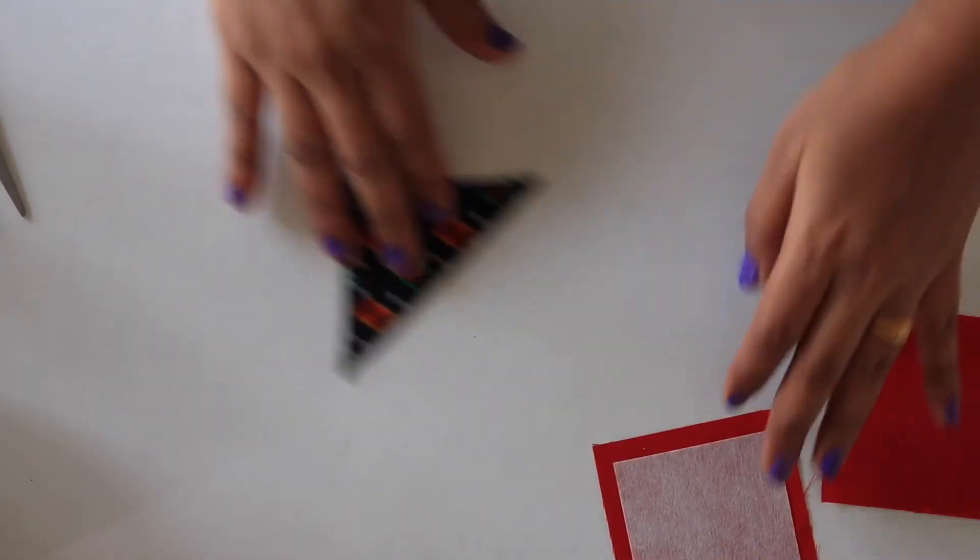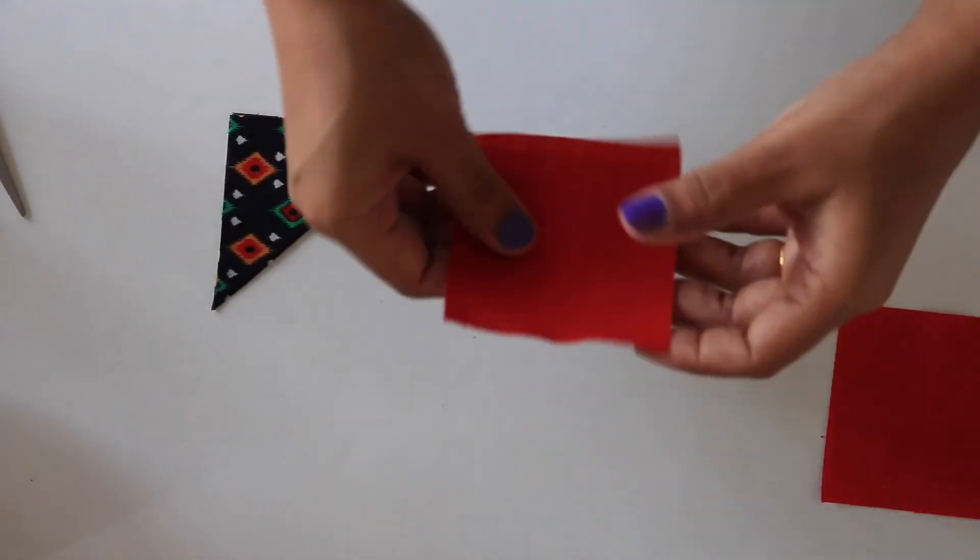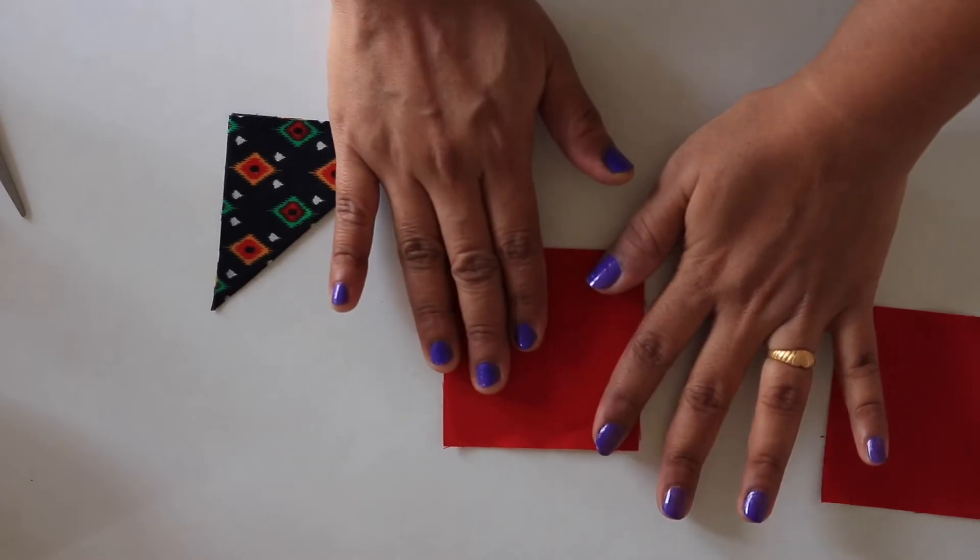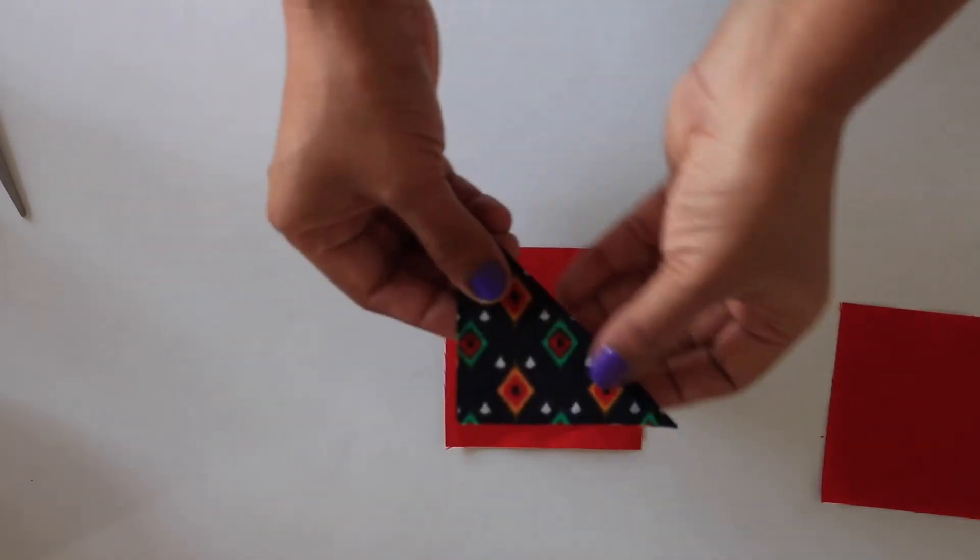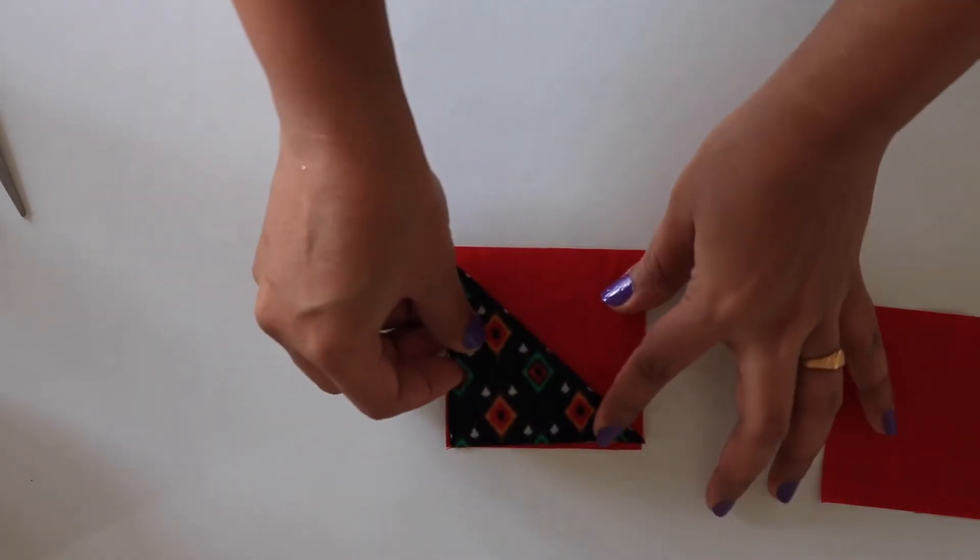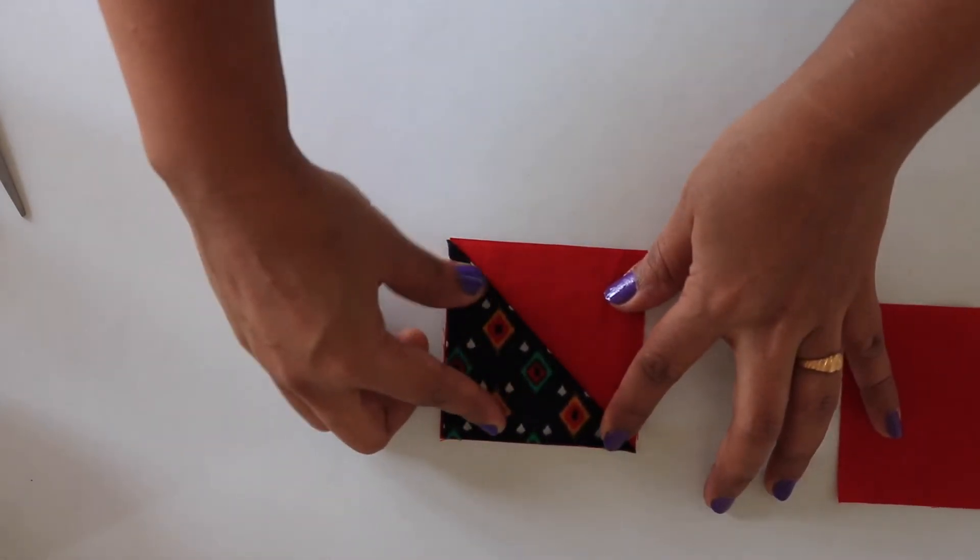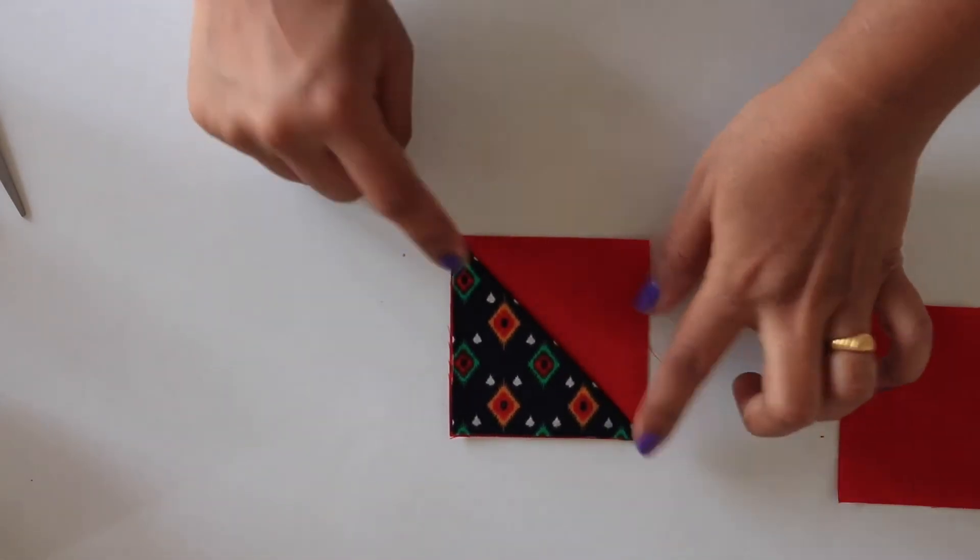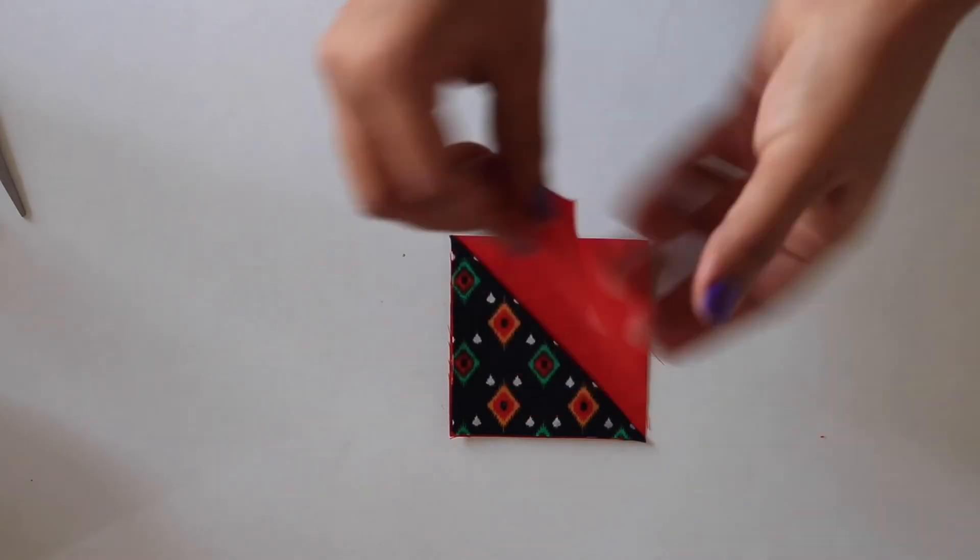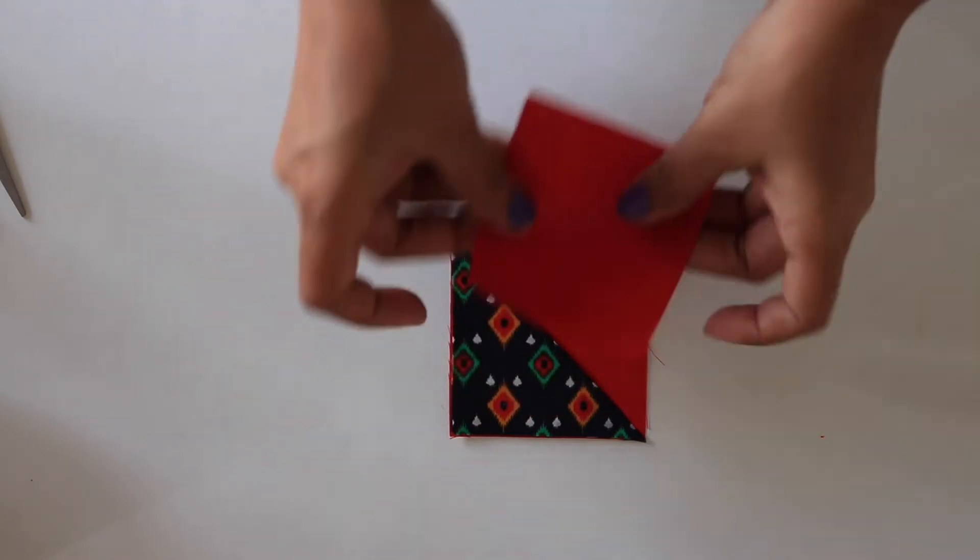Now it's time to assemble everything together. Lay 1 square flat with right side facing up. Then place this triangle on it, then align the raw sides with bottom square. Lastly, place the remaining square with right side facing down.